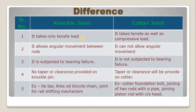Now we see the difference between knuckle joint and cotter joint. In a knuckle joint it takes only tensile load, while in a cotter joint it takes tensile as well as compressive load. In a knuckle joint it allows angular movement between rods, while a cotter joint cannot allow angular movement. In a knuckle joint it is subjected to bearing failure, while in a cotter joint it is not. No taper or clearance is provided on the knuckle pin, but taper or clearance is provided on the cotter for easy removal and fixation.